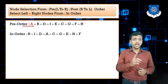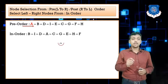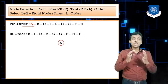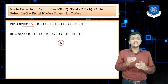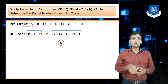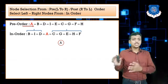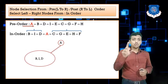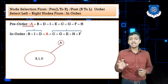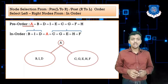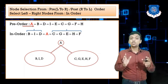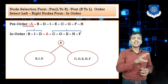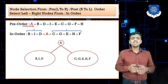We make node A our root. From the in-order sequence, B, I, D are on the left side of A, and C, G, E, H, F are on the right side. So A's left subtree contains {B, I, D} and right subtree contains {C, G, E, H, F}. That completes steps one and two for the root.